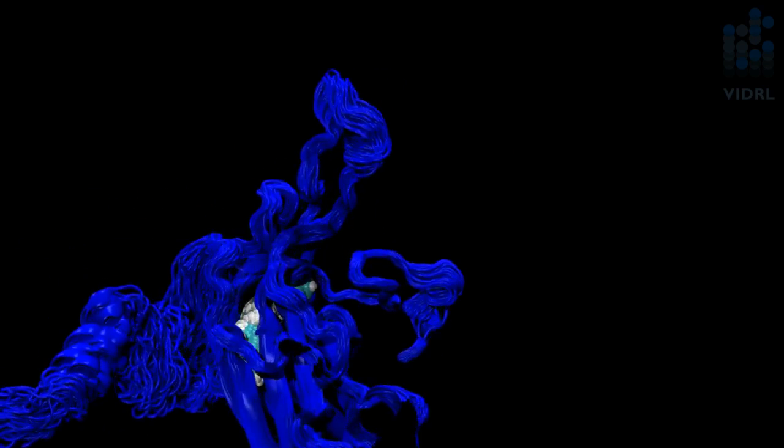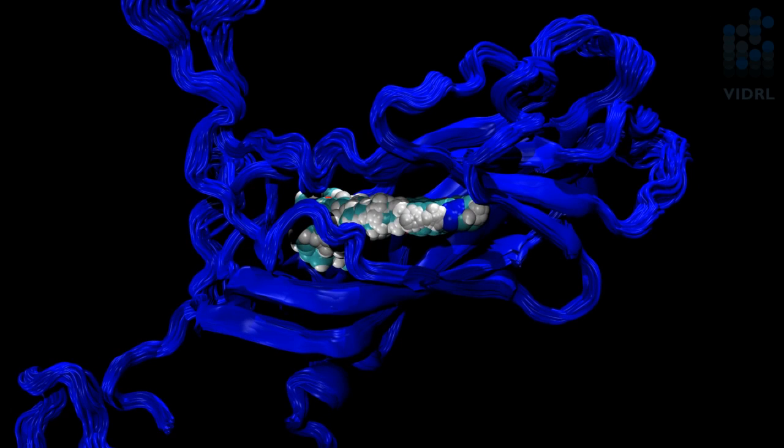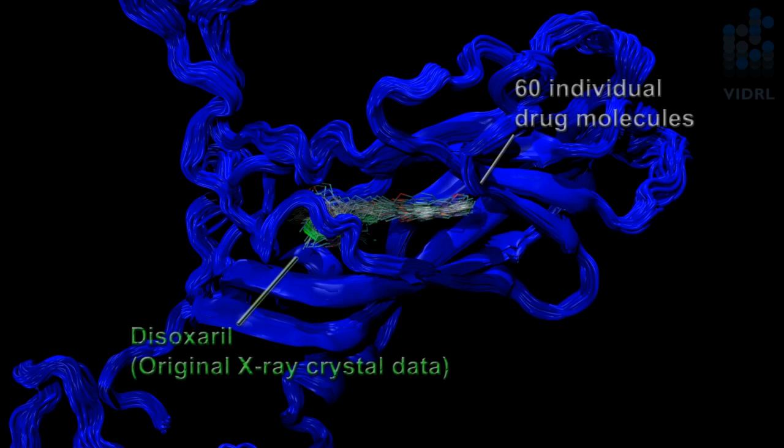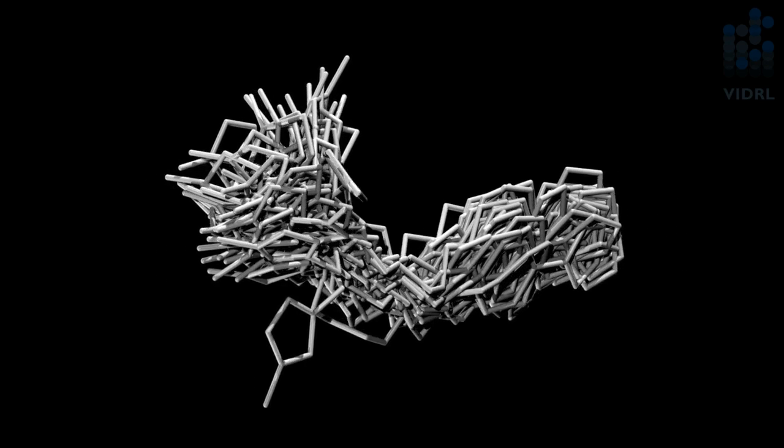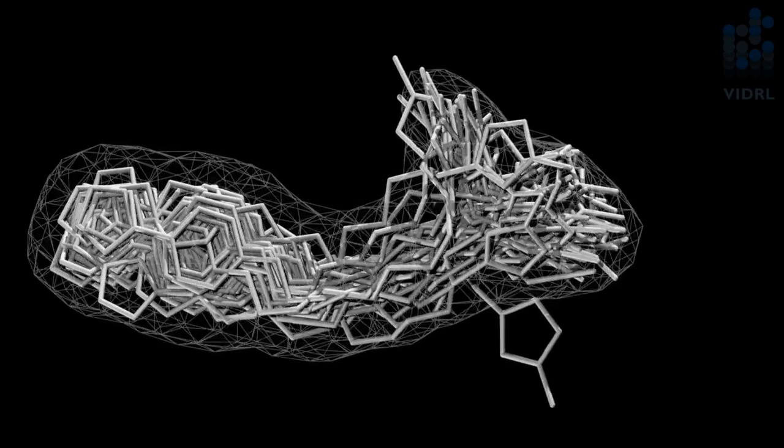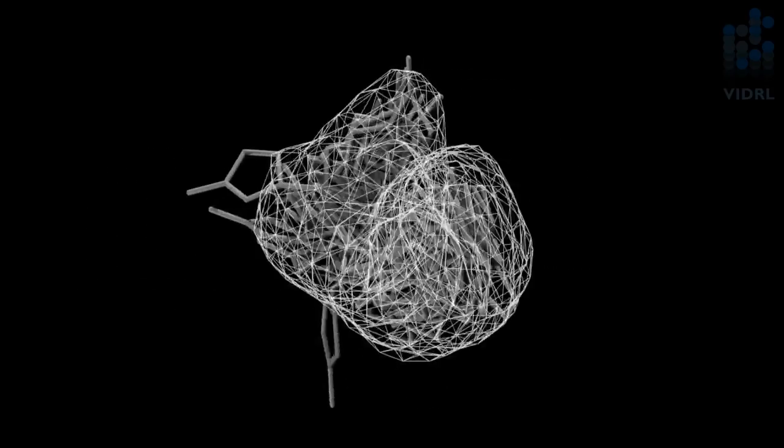What we can then do is take a closer look at the drug which is tightly bound to its position within the virus. What this enables us to do is examine the 60 drug molecules that we've used and compare them to the x-ray crystal data that was originally calculated from in vitro experiments. We can take our 60 molecules and create a density map of those molecules and then compare how well that map matches the original crystal data of the drug bound to the virus.